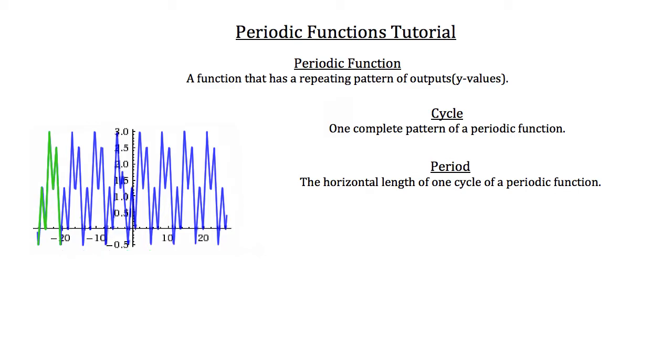Now another important concept of periodic functions is the amplitude of a function. The amplitude of a periodic function is exactly one half the difference between the minimum and maximum values of a periodic function. So what we want to do is look at that cycle there in green on the left.